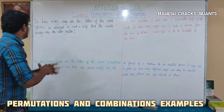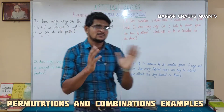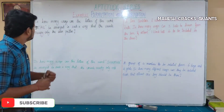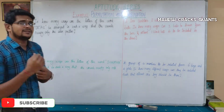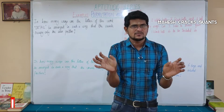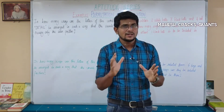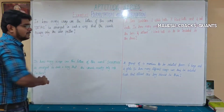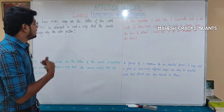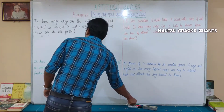If there is no restriction, DETAIL can be arranged in 6 factorial ways because there are six letters. But here the condition is that vowels should occupy only the even positions. Six letters means six places, and the even positions are 2, 4, and 6 — those even positions will only be occupied by vowels.